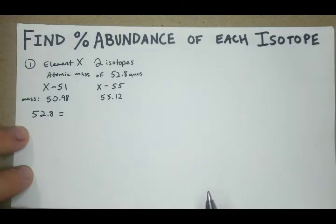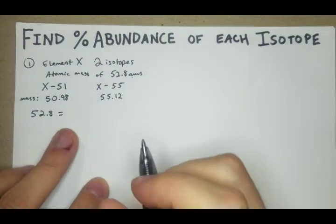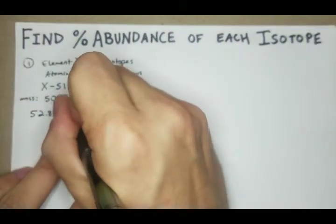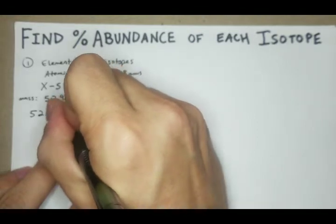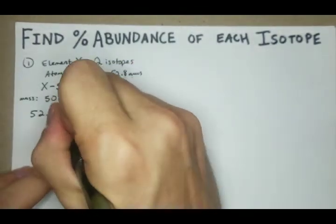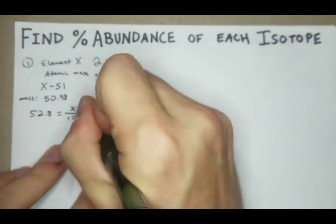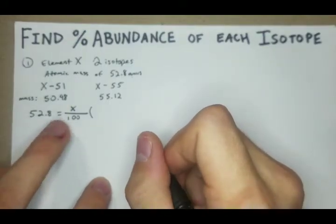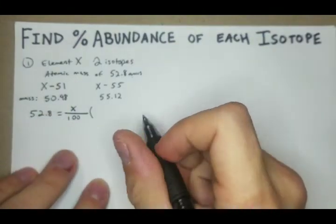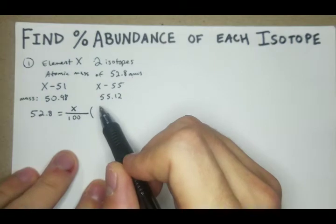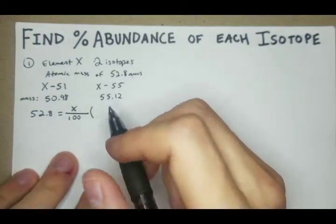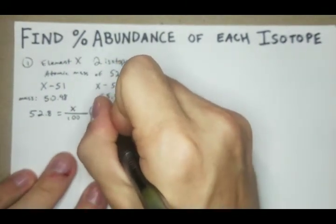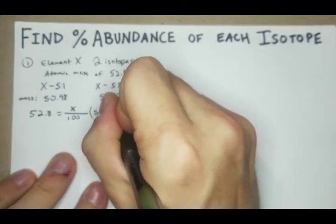Then we'll set that equal to X over 100 times the mass of one of the isotopes. It shouldn't necessarily matter which isotope you choose. We'll just go from right to left here.